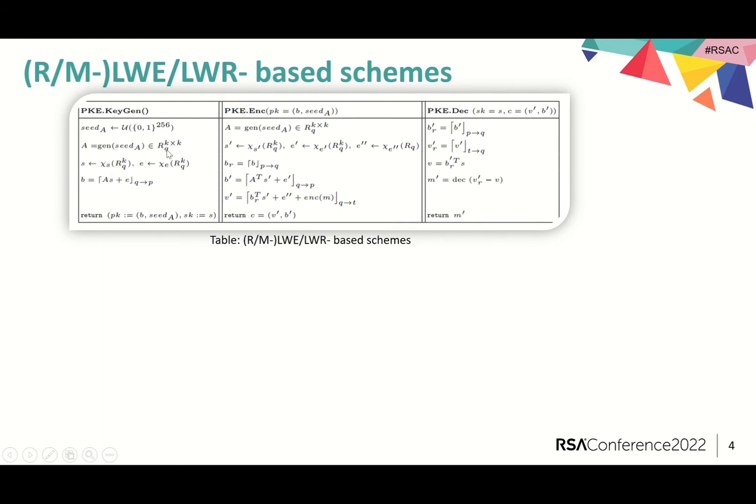Let Q be a prime integer or power of two. We will work on the cyclotomic ring with polynomials having coefficients in ZQ. A user uses seed A to generate a uniform random matrix A. He or she uses the given distributions to sample the secret S and error E and then computes the public key B.